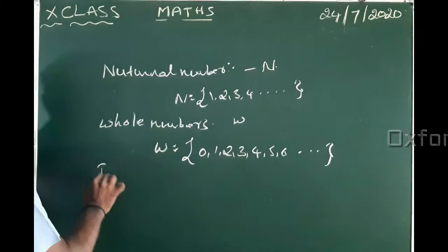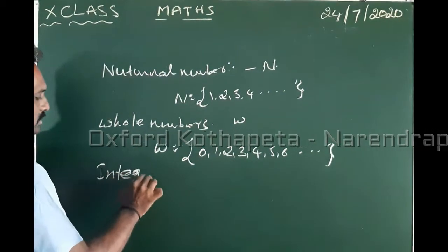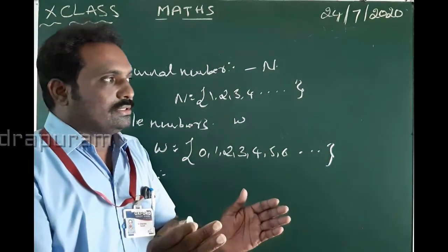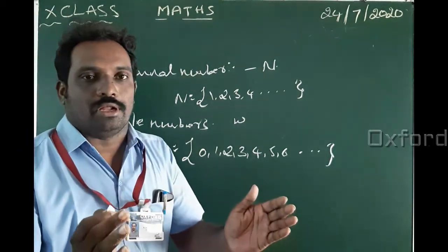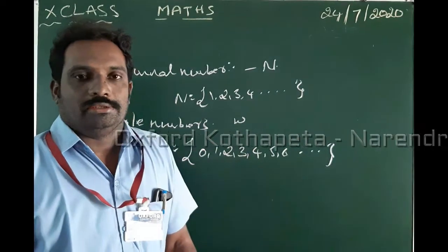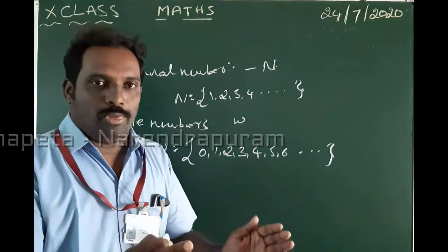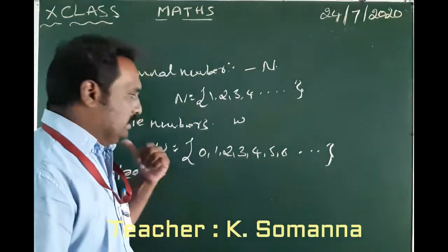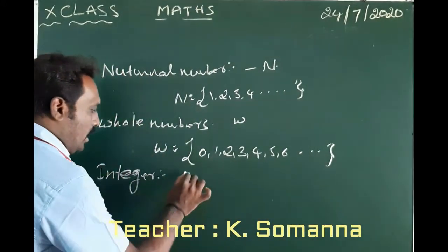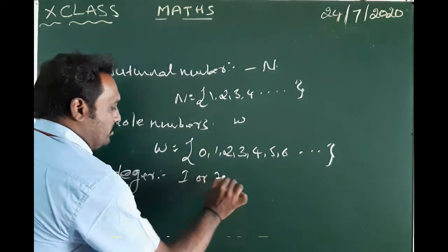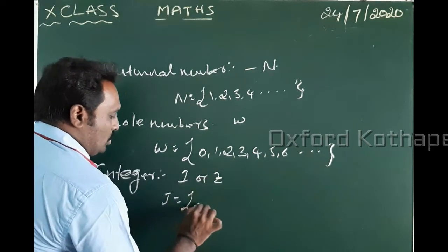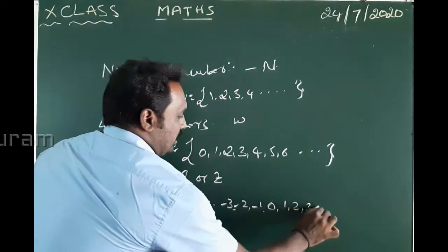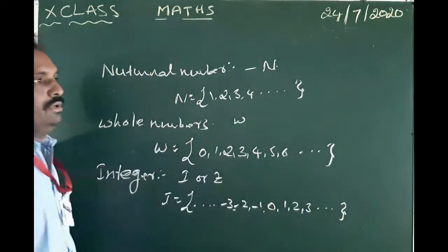Next is integers. Integers include natural numbers, whole numbers, and negative numbers — positive numbers and zero together are called integers, denoted by I or J. I = {..., -3, -2, -1, 0, 1, 2, 3, ...} and so on.